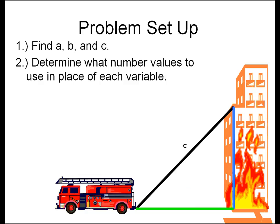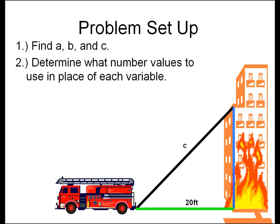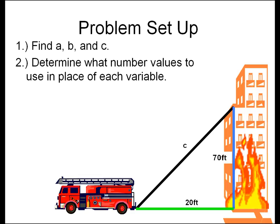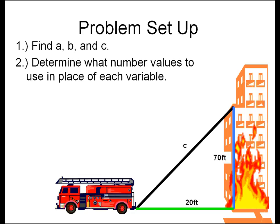Next we have to determine what values to use in place of each variable. Because we know the firefighters must stay 20 feet from the flames, the value of A is 20 feet. The distance from the base of the building to the seventh floor window is 70 feet. Therefore B is replaced by 70 feet.